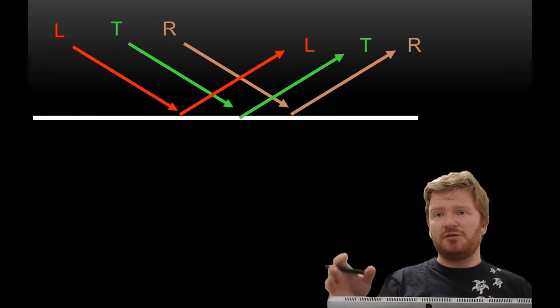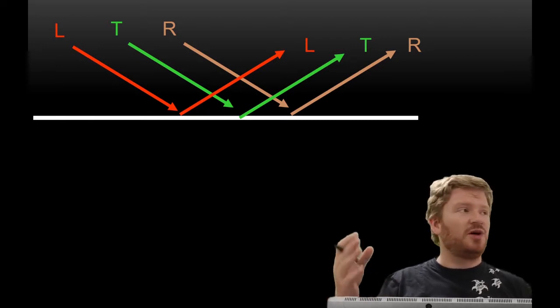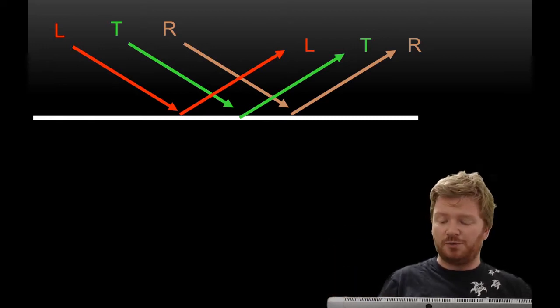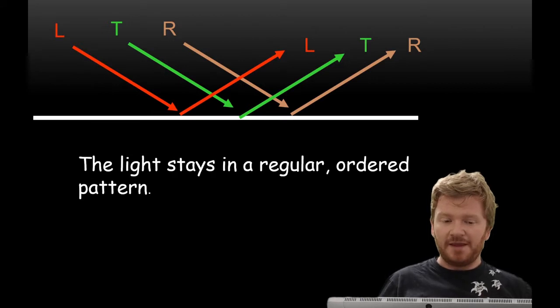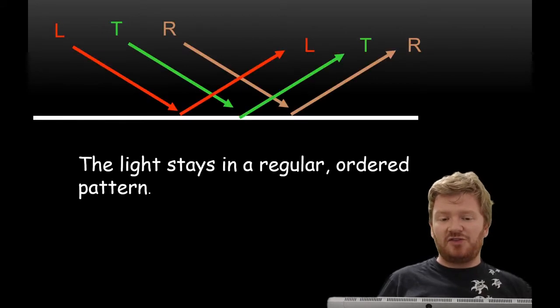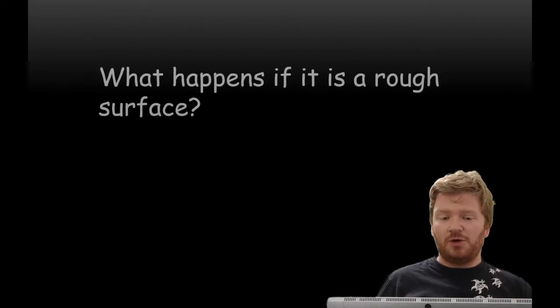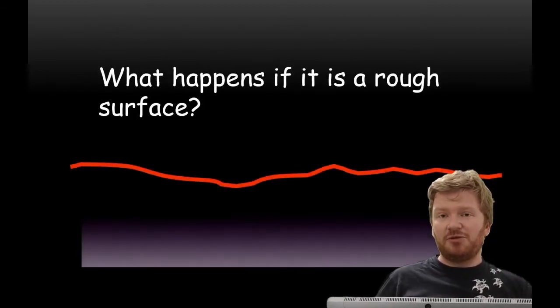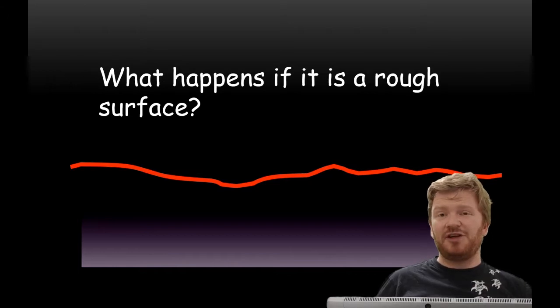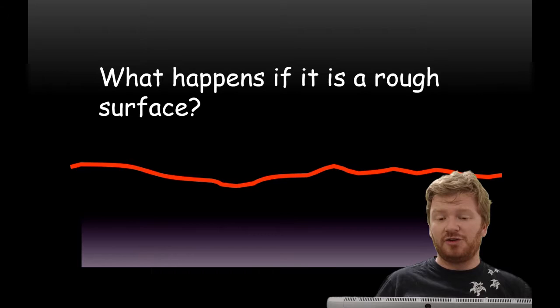So, why don't we see reflections everywhere then? Why is the world not just like a big old hall of mirrors? Well, that's because this is only true if we have a nice, smooth surface. What about a rough surface? And microscopically, this is what pretty much everything in the world looks like. A sheet of paper looks like this. Even your desks really look like this.